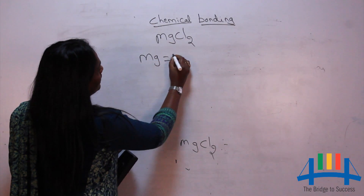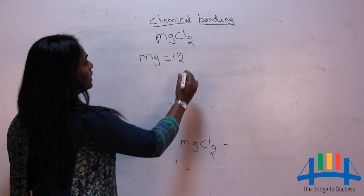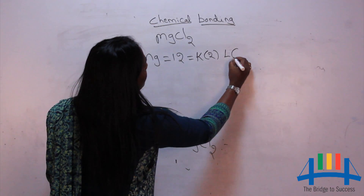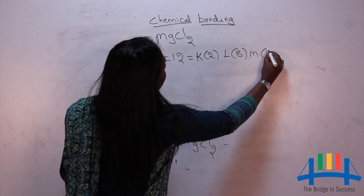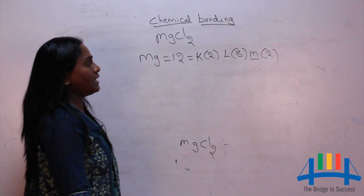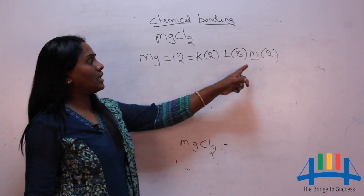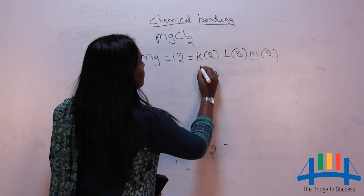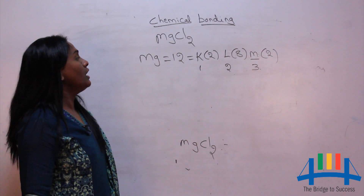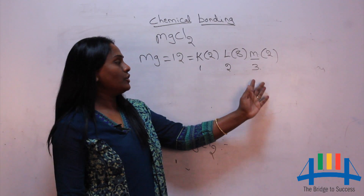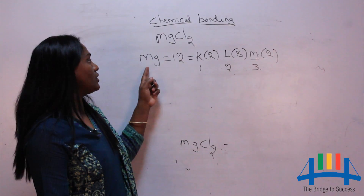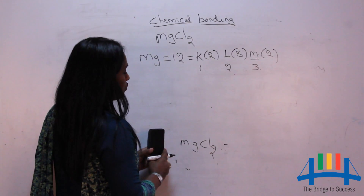Magnesium has atomic number 12 and its electronic configuration is K2, L8, M2. Its outermost shell is the M shell (third shell). There are two electrons in its outermost shell.